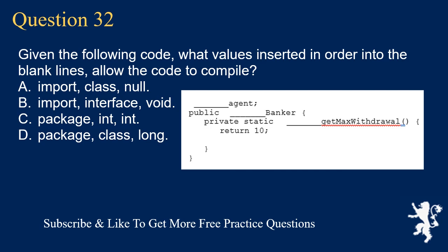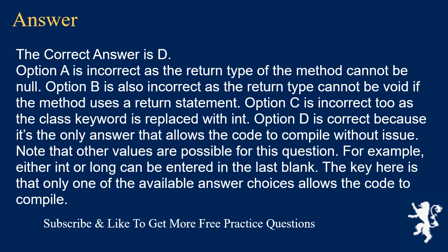Question 32: Given the following code, what values inserted in order into the blank lines allow the code to compile? A) import, class, null. B) import, interface, void. C) package, int, int. D) package, class, long. The correct answer is D. Option A is incorrect as the return type of a method cannot be null. Option B is incorrect as the return type cannot be void if the method uses a return statement. Option C is incorrect as the class keyword is replaced with int. Option D is correct as it is the only answer that allows the code to compile. Note that other values are possible — both int or long can work in the last blank.